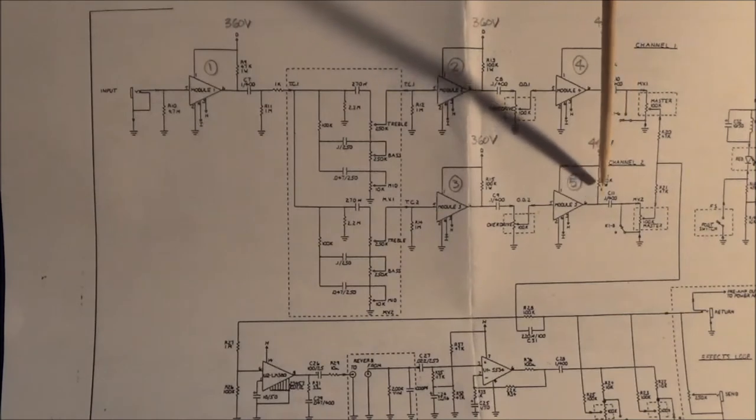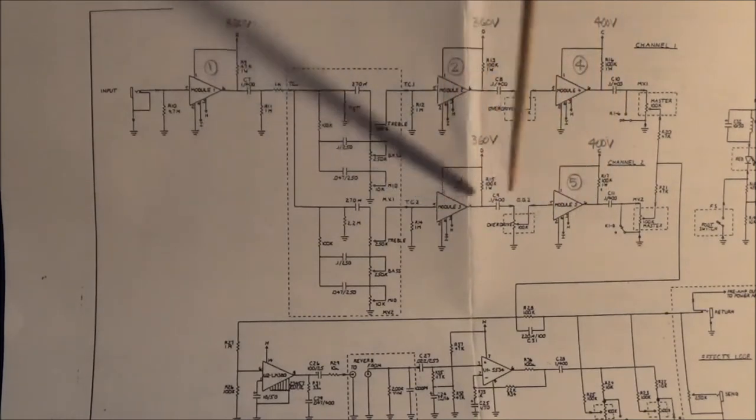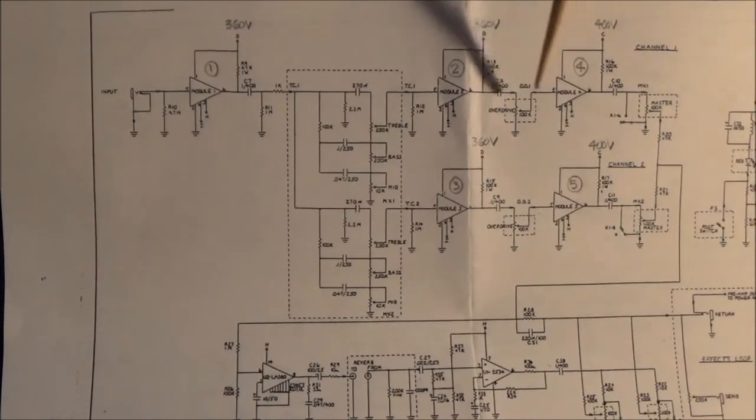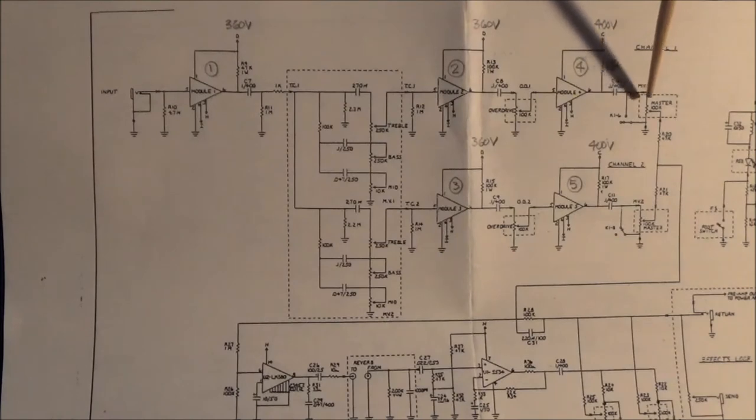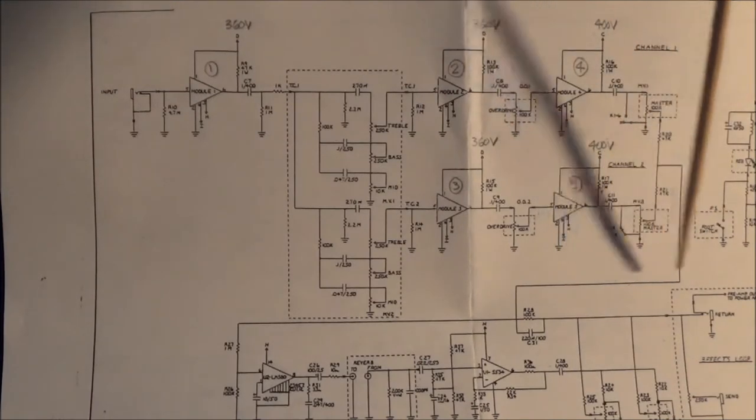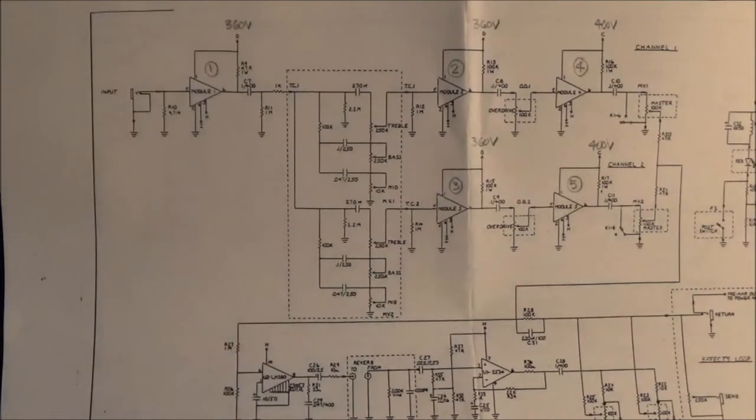Or module 5 if you're in channel 2. You'll notice that the B+ voltage is 360 volts here and here, and 400 after the overdrive control. Then the master volume, of course, is exactly what it is—it controls the overall volume of this whole signal chain going to the power amp section of the amp.